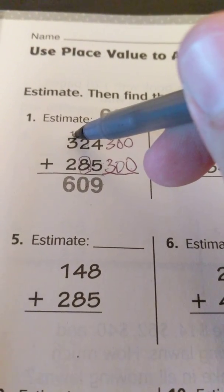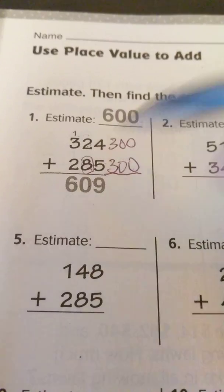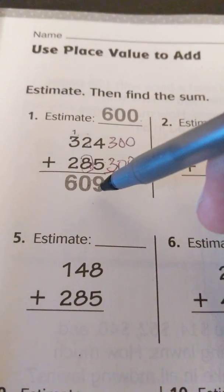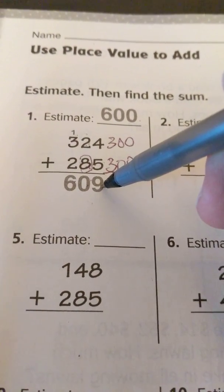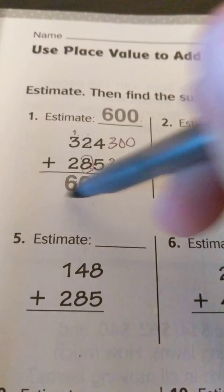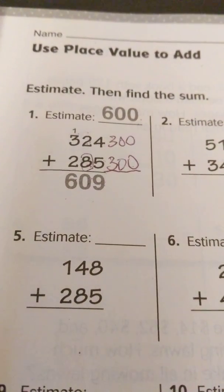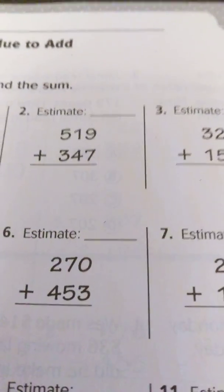Then added this up and got 609. So you see if I was to round this number to the nearest hundred it would still end up being 600. I'm going to go ahead and just do a couple examples.